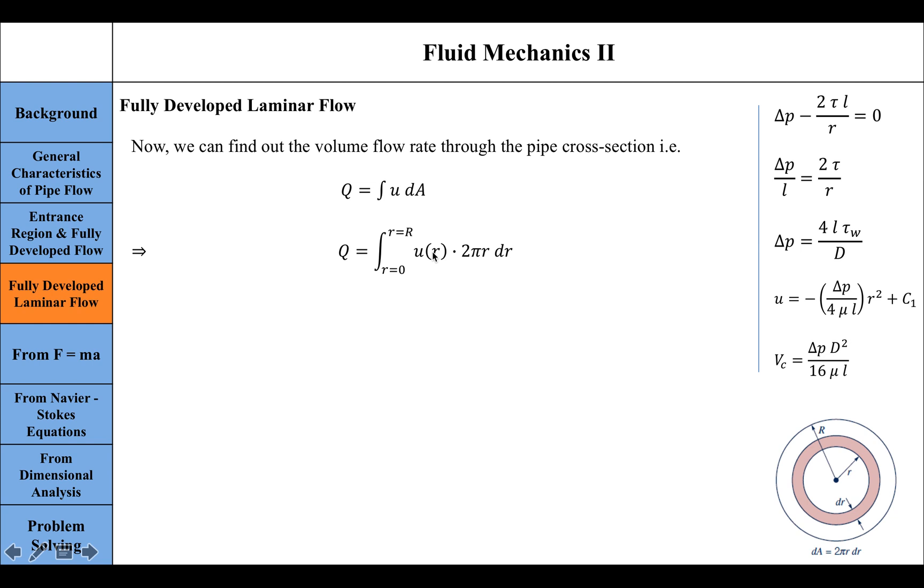We substitute the velocity profile relationship, which is dependent on the radius of the pipe. Then we just plug in the value of the velocity profile expression and simplify. This is what we find after integrating this term.